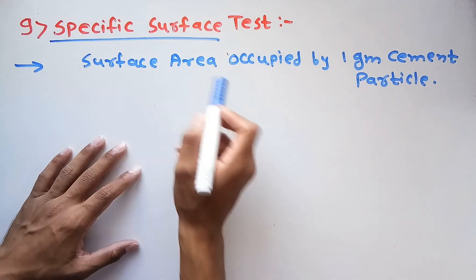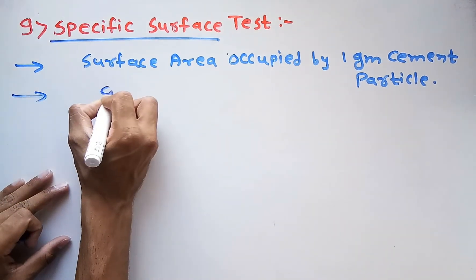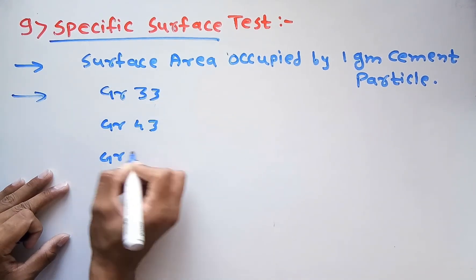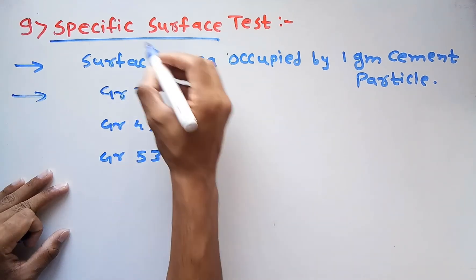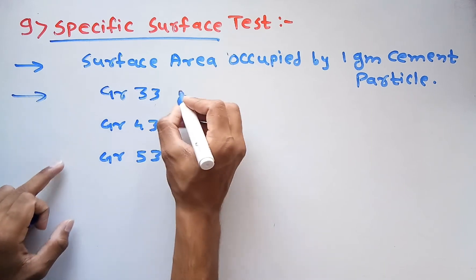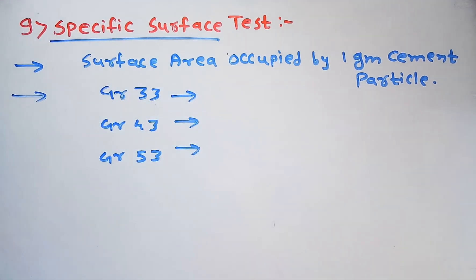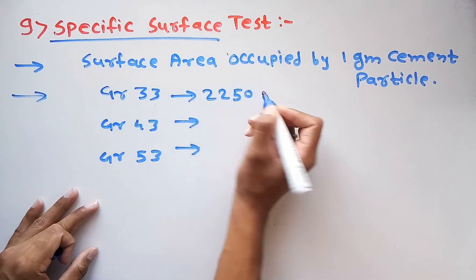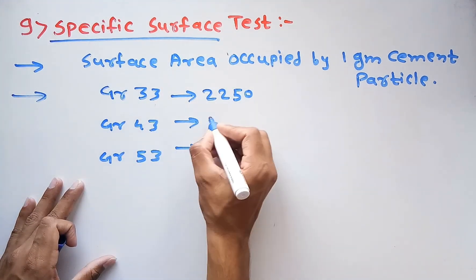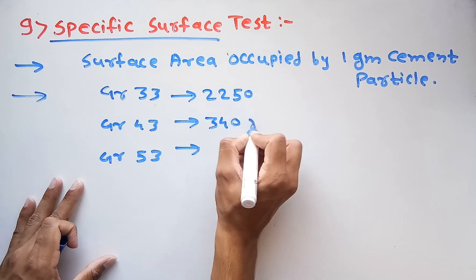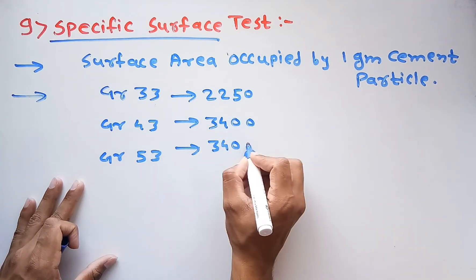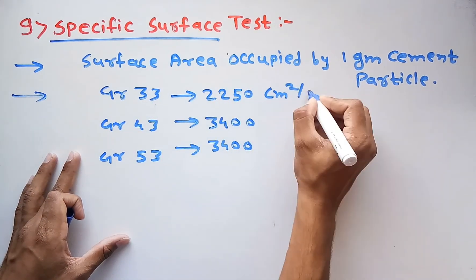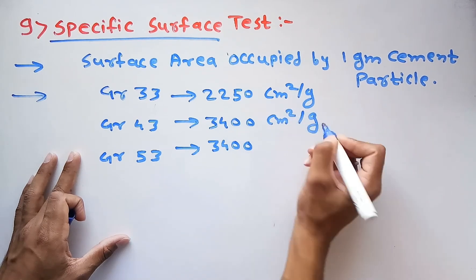Based on this surface area, three grades of cement are formed: Grade 33, Grade 43, and Grade 53. The minimum specific surface area for Grade 33 should be 2250 cm²/g, and for Grade 43 and Grade 53 it should be around 3400 cm²/g.